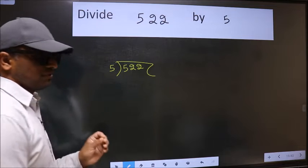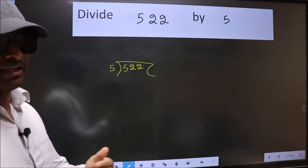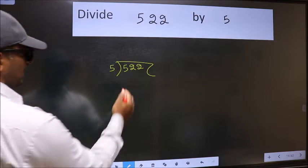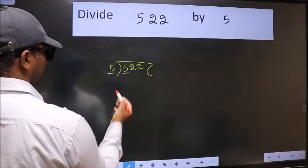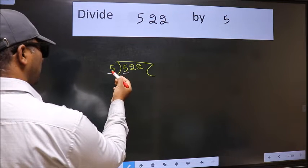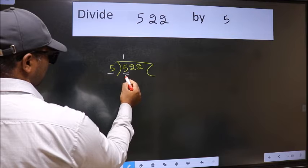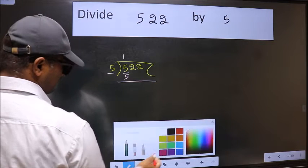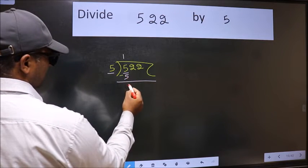This is your step 1. Next, here we have 5 and here also 5. When do we get 5 in 5 table? 5 once 5. Now, we should subtract. We get 0.